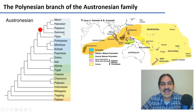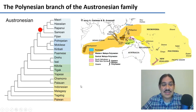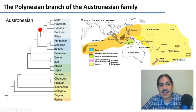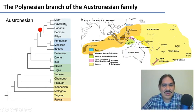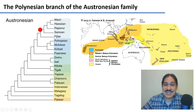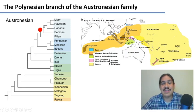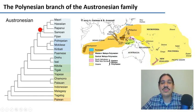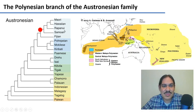This is a huge language family — it includes languages like Indonesian, Tagalog from the Philippines, Chamorro from the Carolinas. This branch, the one that includes Maori, Hawaiian, Rapa Nui, Samoan, and Fijian, is called Polynesian. We're going to reconstruct what the language would have sounded like in the branch that joins Maori, Hawaiian, Rapa Nui, Samoan, and the languages of this region.